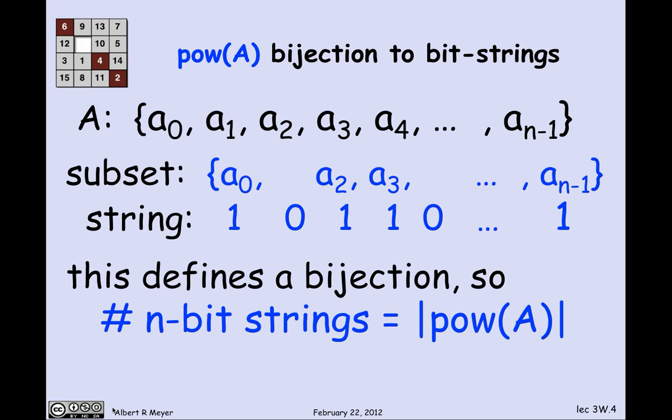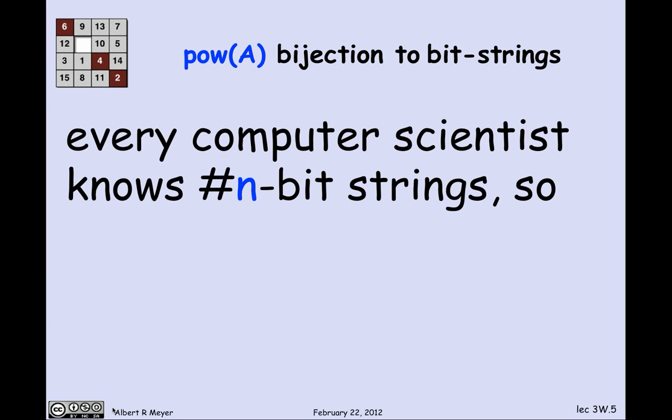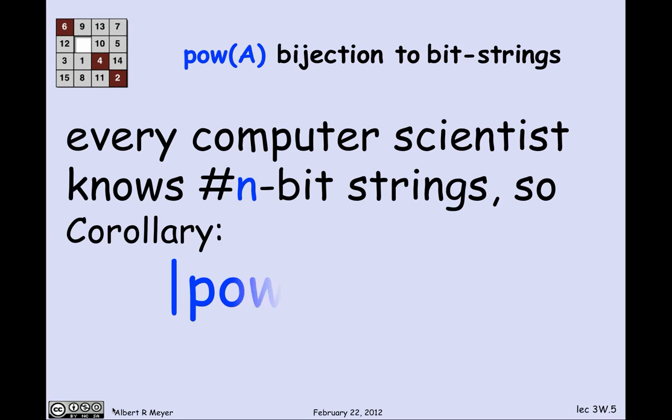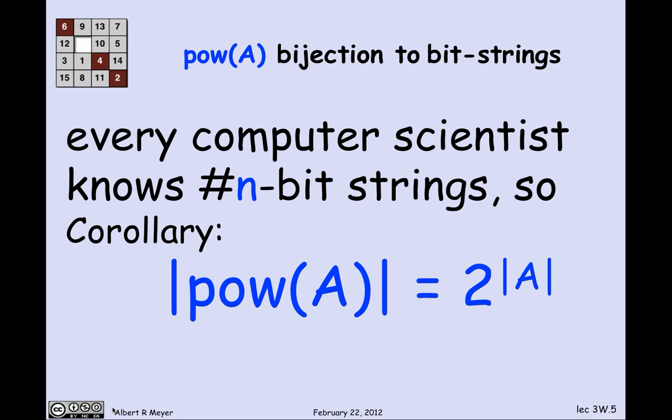This clearly defines a bijection between subsets and bit strings, because given a subset I can uniquely determine the string, and given the string I can uniquely determine the subset. By the bijection theorem, the number of n-bit strings equals the size of the power set of A. Every computer scientist knows there are 2^n n-bit strings, so the power set of A has 2^n elements. Since n = |A|, we get the formula: |P(A)| = 2^|A|.